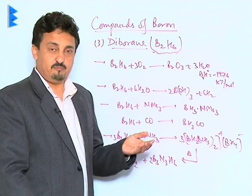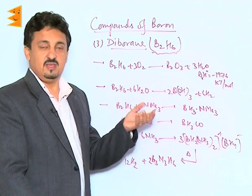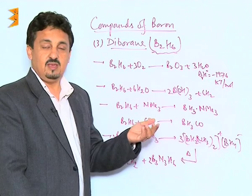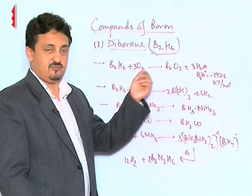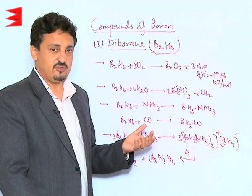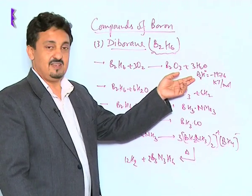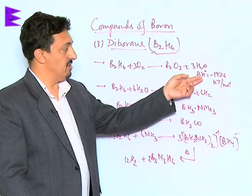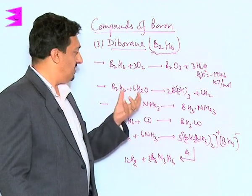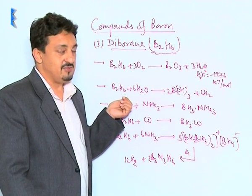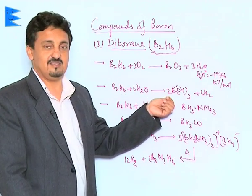It leads to the formation of B2O3 along with water when combusted in oxygen or catches fire. This reaction is highly exothermic with a ΔrH° of -1976 kJ/mol. It also gets easily hydrolyzed, leading to the formation of boric acid and releasing hydrogen gas.